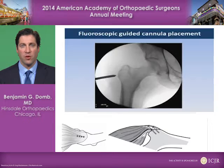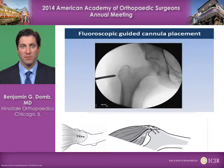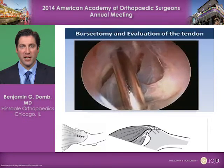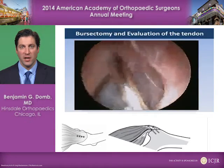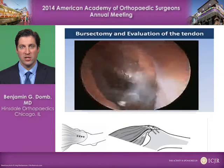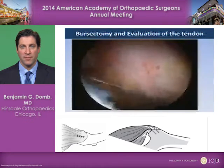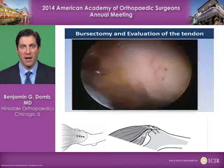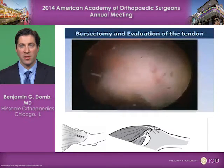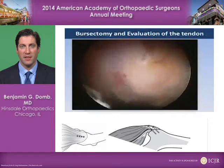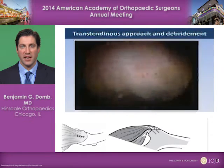We begin with fluoroscopic guidance to access the peritrochanteric space, and portals may be placed in a variety of locations around the peritrochanteric space. A trochanteric bursectomy is necessary in order to expose the tendinous insertion. Understanding the arthroscopic or endoscopic anatomy of the peritrochanteric space is important in order to elucidate the tendon insertion, which can then be probed and the deep-sided tendon tear identified.